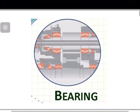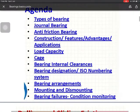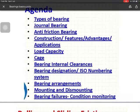Bearings are used mainly for supporting shafts. The topics I will cover include: types of bearings, general bearings, anti-friction bearing construction features, advantages, applications, load carrying capacity, cages, bearing internal clearance, ISO numbering system for bearing designation, bearing arrangements, mounting, dismounting, and bearing failures.